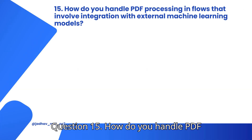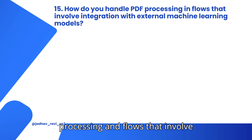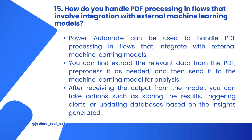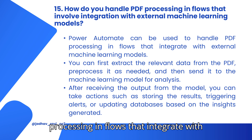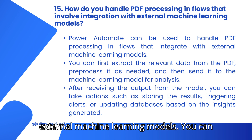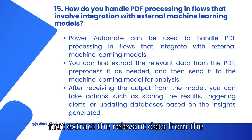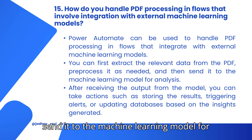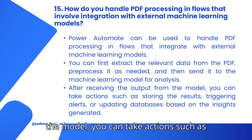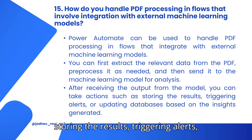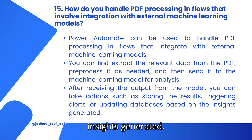Question 15: How do you handle PDF processing and flows that involve integration with external machine learning models? Power Automate can be used to handle PDF processing and flows that integrate with external machine learning models. You can first extract the relevant data from the PDF, preprocess it as needed, and then send it to the machine learning model for analysis. After receiving the output from the model, you can take actions such as storing the results, triggering alerts, or updating databases based on the insights generated.